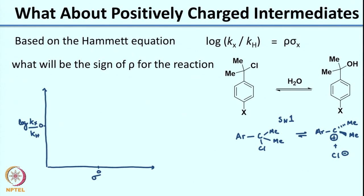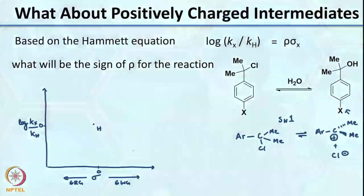Now with substituents on the aromatic ring plotted on the Hammett graph — log of Kx over Kh on y-axis versus sigma on x-axis, with (0,0) being hydrogen — electron-withdrawing groups are on the positive sigma side. If you have an electron-withdrawing substituent, consider a nitro group: it will destabilize your carbocation, thereby decreasing the rate. Conversely, an electron-releasing substituent stabilizes the carbocation and increases the rate.